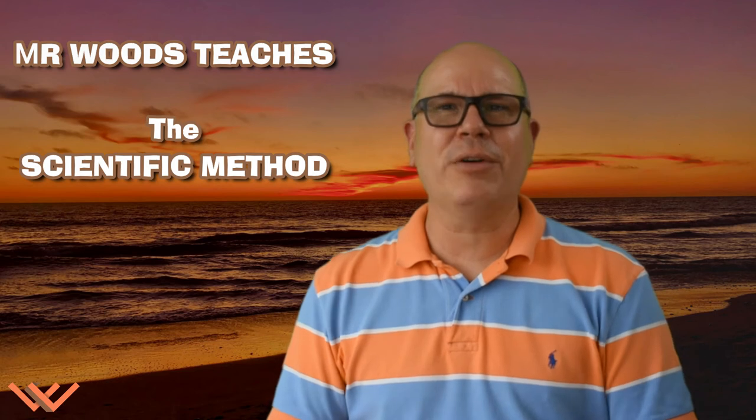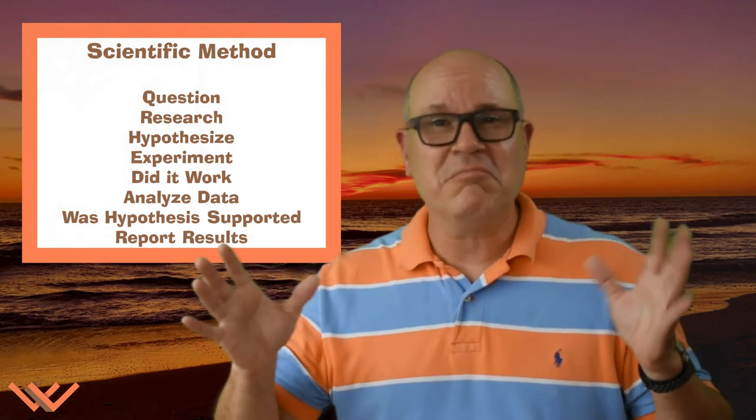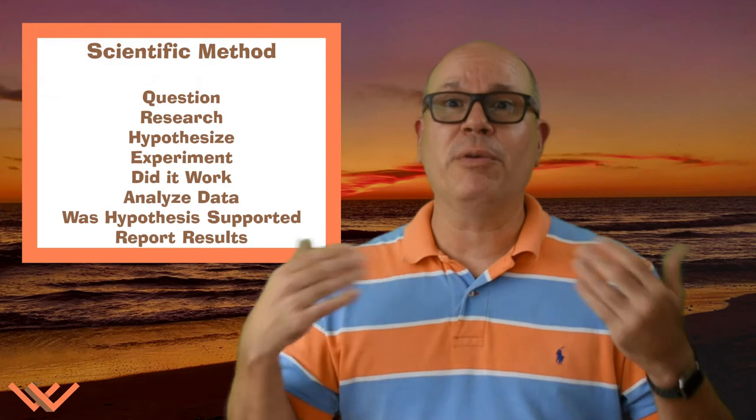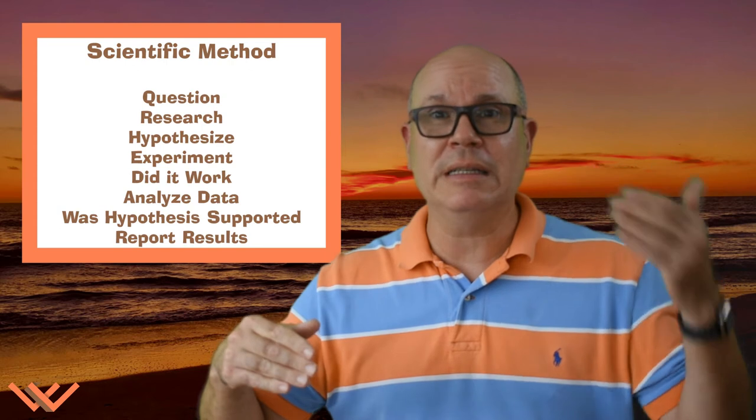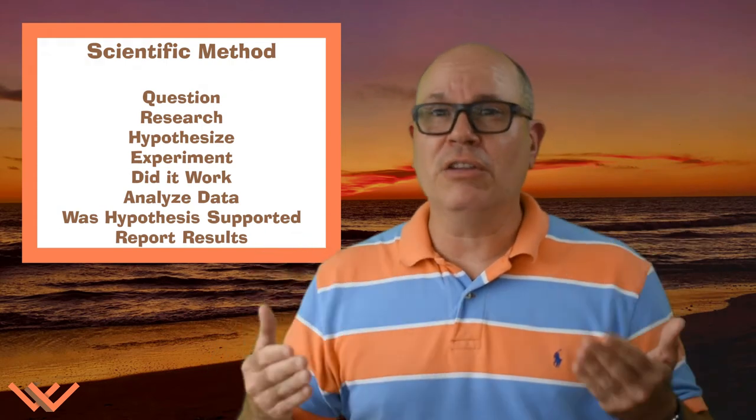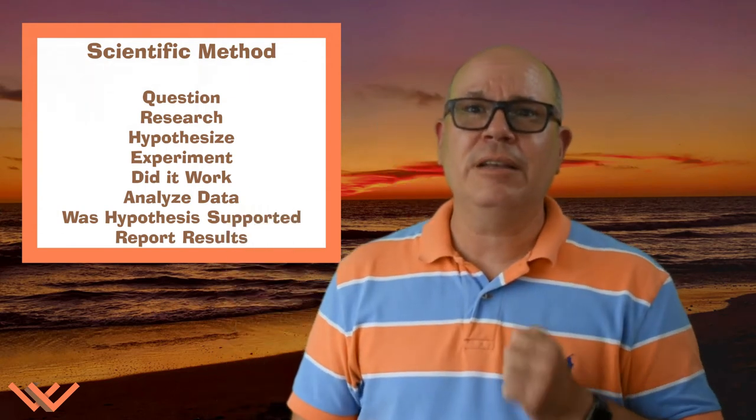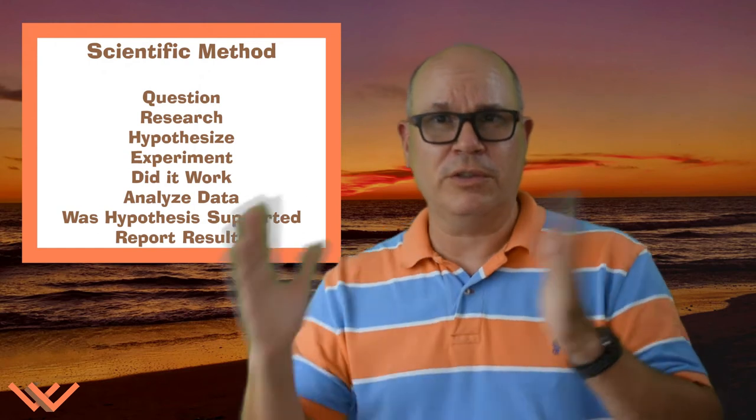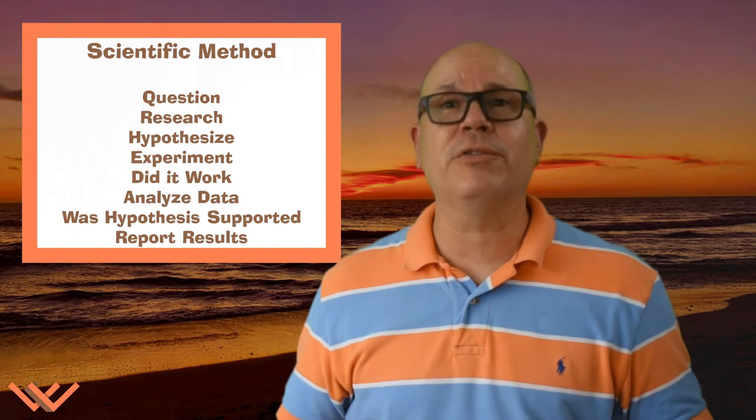Today we're going to be going over the eight step process for the scientific method. This is where we're going to have your initial question, looking at some research, background information, hypothesize. That's kind of an educated guess where you perform the experiment. That's where you set everything up, make sure you have variables set up correctly in your environment. And then you look at, did it work? Analyze the data. And then check to see if your hypothesis was supported by the results of your experiment. And then report your results or publish your results.